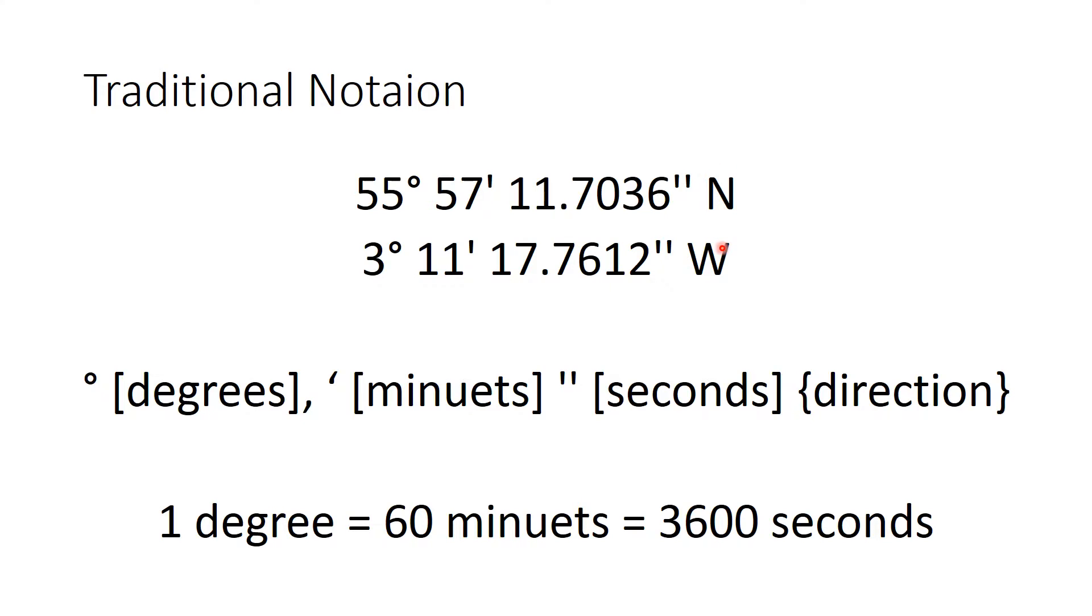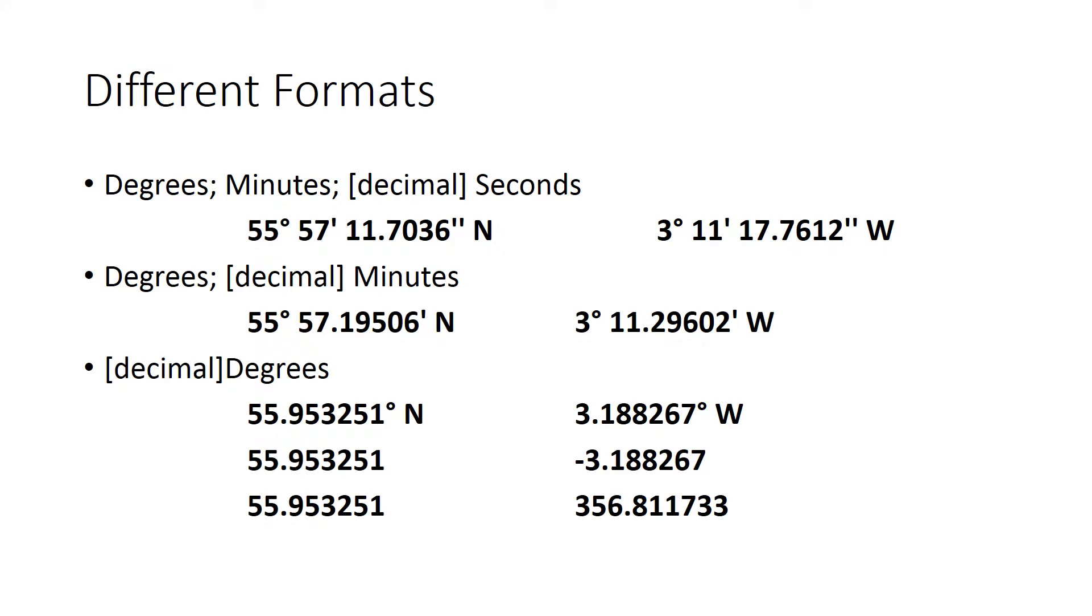It's quite common to put the north or the south or the east or the west on the end of those, just to avoid confusion as to whether things are positive or negative. So this is the location of Edinburgh in the UK. But annoyingly, quite a lot of these data can be found in different formats. This is the traditional degrees, minutes, and then seconds, and in this case seconds are in decimal notation here. The exact same place can be written out in this additional format here, where instead of using seconds, we've basically combined the seconds into the minutes column, so 11.7 seconds is 0.19 of a minute.